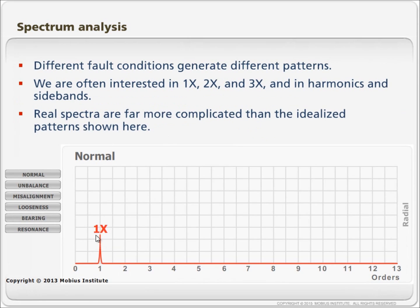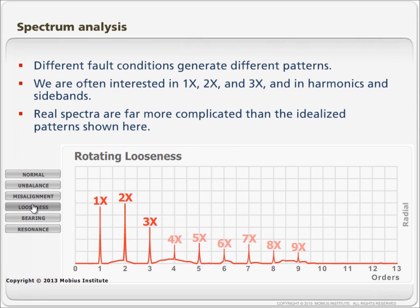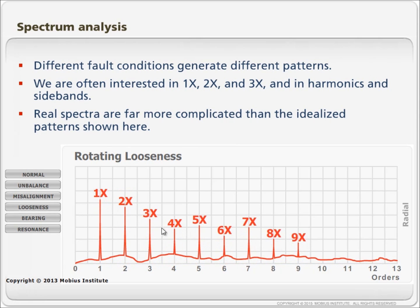If the vibration was normal, we always expect some vibration at the running speed. But in an ideal world we would not see any other vibration. If there was unbalance though, that vibration would be higher. If there was misalignment, we might see 2x or 3x or 4x or 5x. That's a different story. Looseness, for rotating looseness, we might see lots of these peaks which are called harmonics.